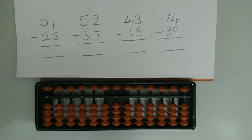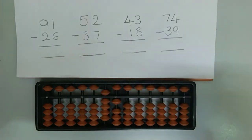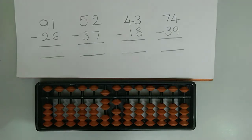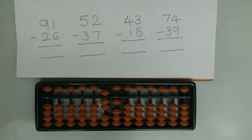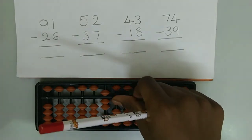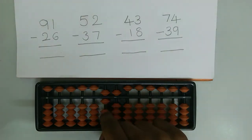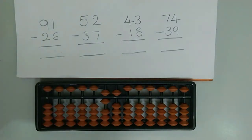Now let's try 2-digit subtractions using the big family concept. Let's try the first example which is 91 minus 26. First we need to represent 91 on the abacus. Now we need to subtract 26. First we need to subtract 2 from the tens rod. Now we need to subtract 6 from the ones rod. Since this is subtraction, we use the formula plus friend minus boss. The friend of 6 is 4, so we need to add 4 to 1. Here we use the small friend concept. The small friend of 4 is 1, so we subtract 1 and add the boss which is 5. And at the last we need to subtract the big friend boss which is 10, because overall this is subtraction. The final answer is 65.